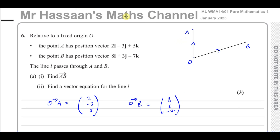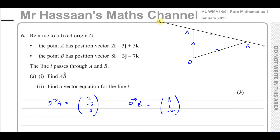They're telling us that line L passes through points A and B. So there's a line L passing through points A and B.